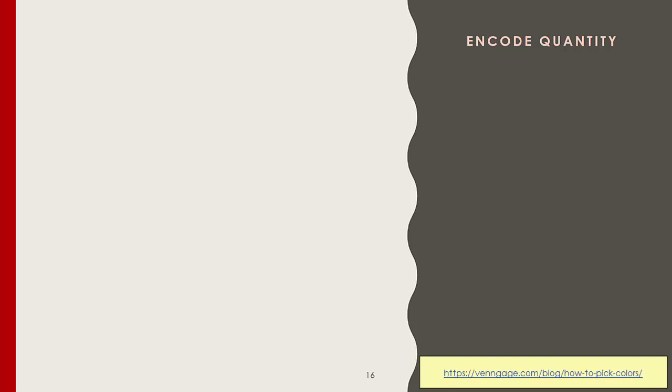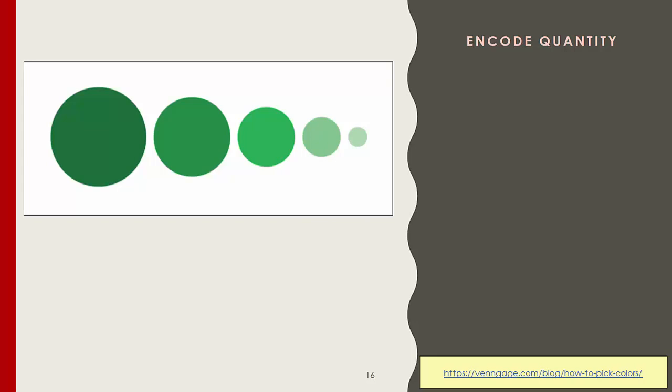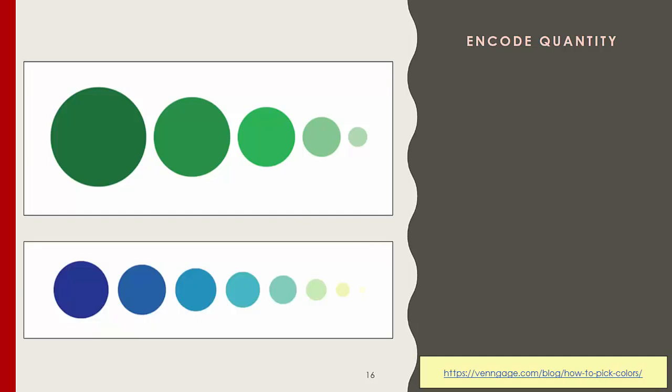Encoding quantity is the third purpose of colors in an infographic. The human eye can identify between four and five differences or levels of the same color. However, if you add a complementary color — like blue paired with a very light yellowish-green — the human eye can identify up to nine levels.